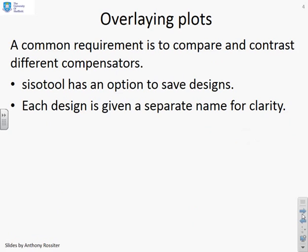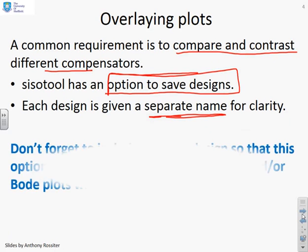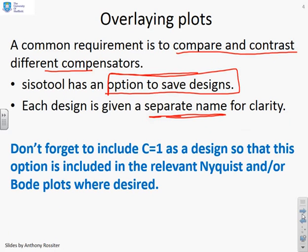Overlaying plots then. A common requirement is to compare and contrast different compensators. The new CISOTOOL has an option to save designs — that's really key because you can save designs and now overlay them. Each design is given a separate name so you know which is which. A bit of a warning here: don't forget to include C equals 1 as one of your designs, so this option is included in any relevant comparisons. Sometimes C equals 1 will be hopeless.